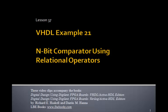This is Lesson 37, VHDL Example 21. Remember in the last example we made a 4-bit comparator by cascading four 1-bit comparators together.